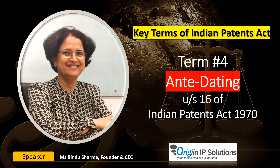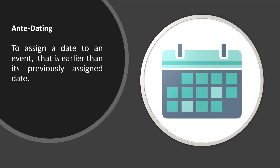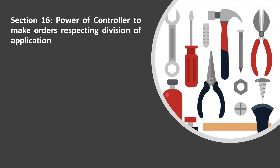Section 16 of the Act. The term antedating generally means to assign a date to an event that is earlier than its previously assigned date. In patent law, this term is used with respect to divisional patent application. Section 16, power of controller to make orders respecting division of application, is an important section from an examination point of view.